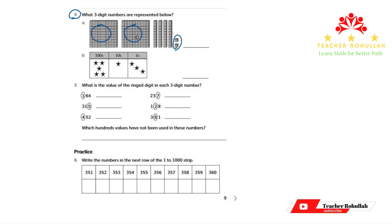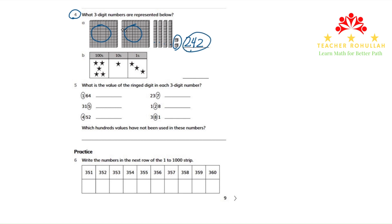How many hundreds blocks do we have? We have two hundreds blocks, so we will have a two in the hundreds place. How many tens blocks do we have? We have four tens blocks, so we will have a four in the tens place. How many units blocks do we have? We have two units blocks, so we have a two in the units place. The three-digit number shown by these number blocks is 242.